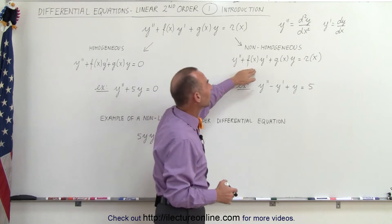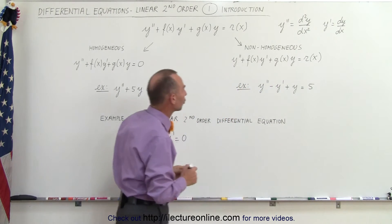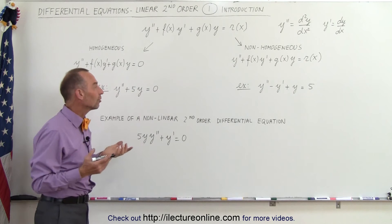On the right side, you see that r of x does exist, and that's then considered a non-homogeneous second order differential equation. Now, notice here are some examples.